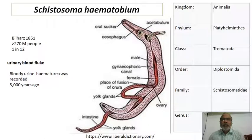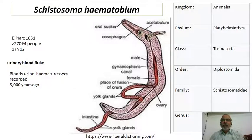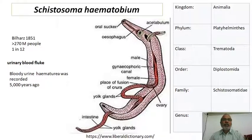Trematoda individuals are generally called flukes. Platyhelminthes has three kinds of organisms: turbellarians, trematodes, and cestodes. This parasite Schistosoma haematobium belongs to class Trematoda and is generally called a blood fluke. It belongs to order Diplostomida, family Schistosomatidae, genus Schistosoma, and the species is Schistosoma haematobium.